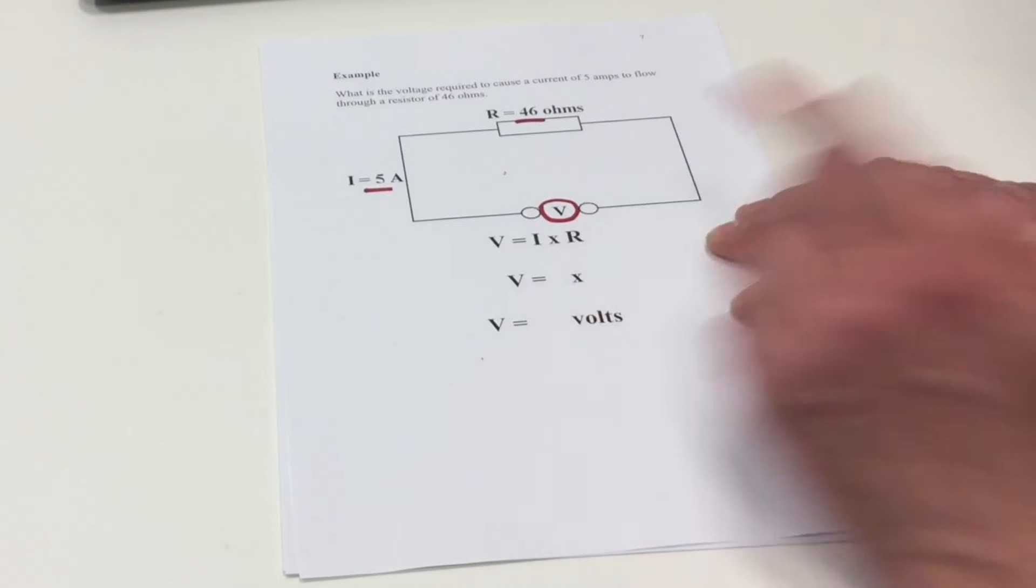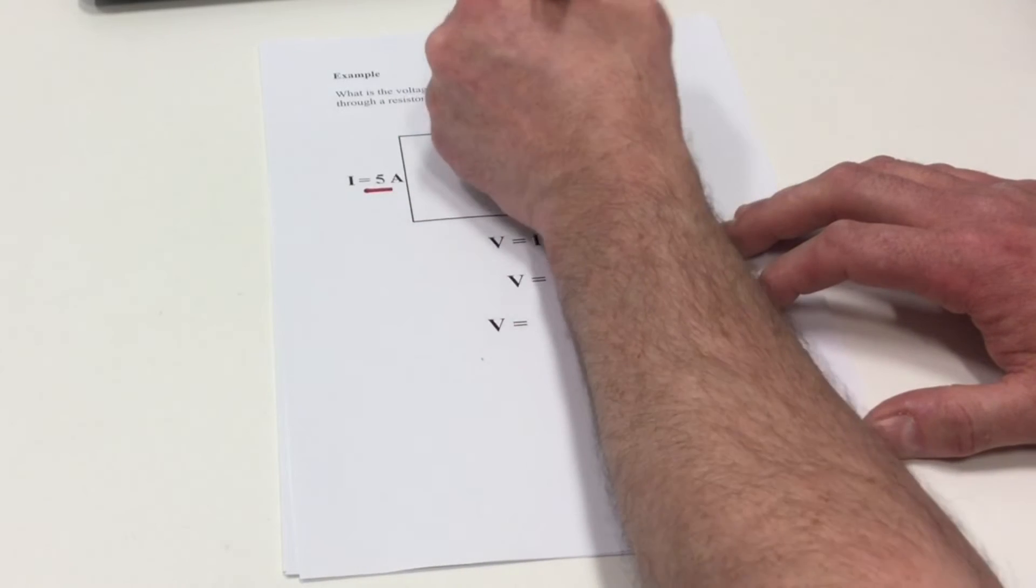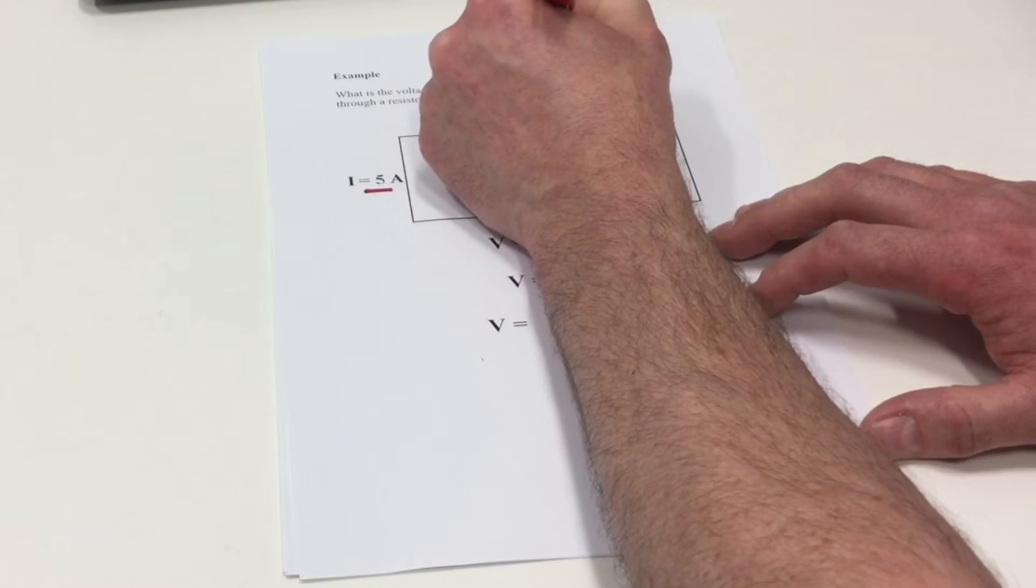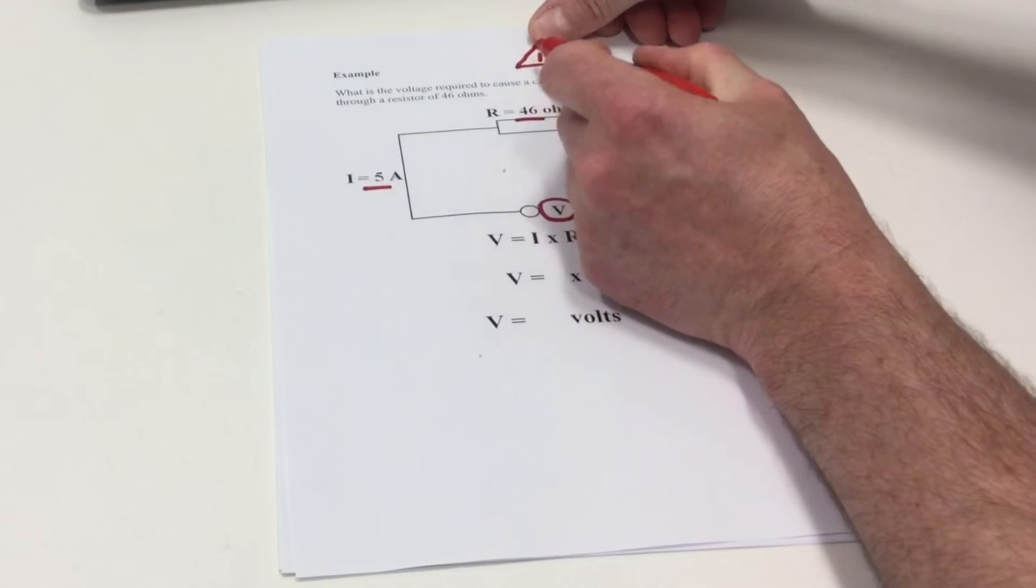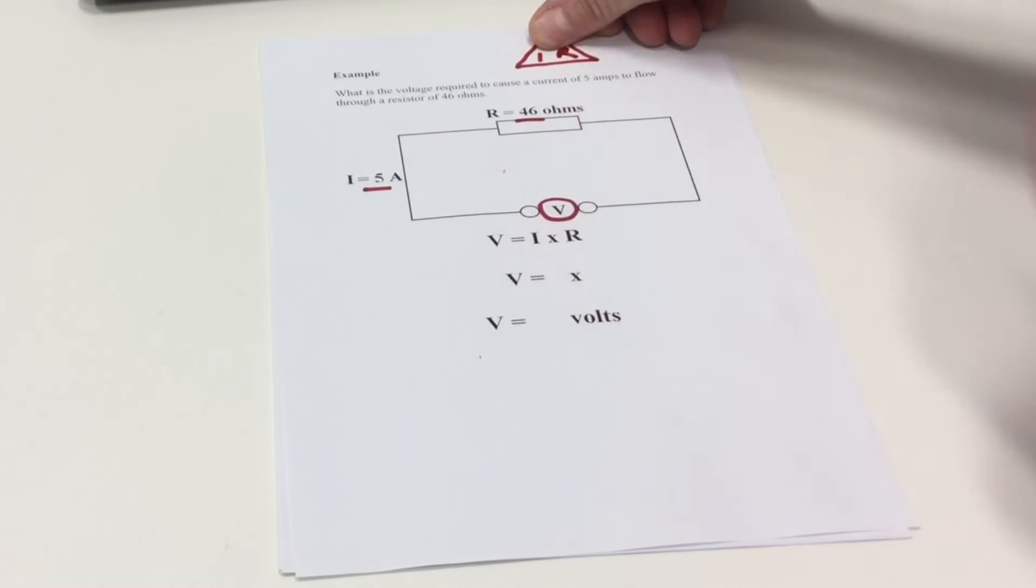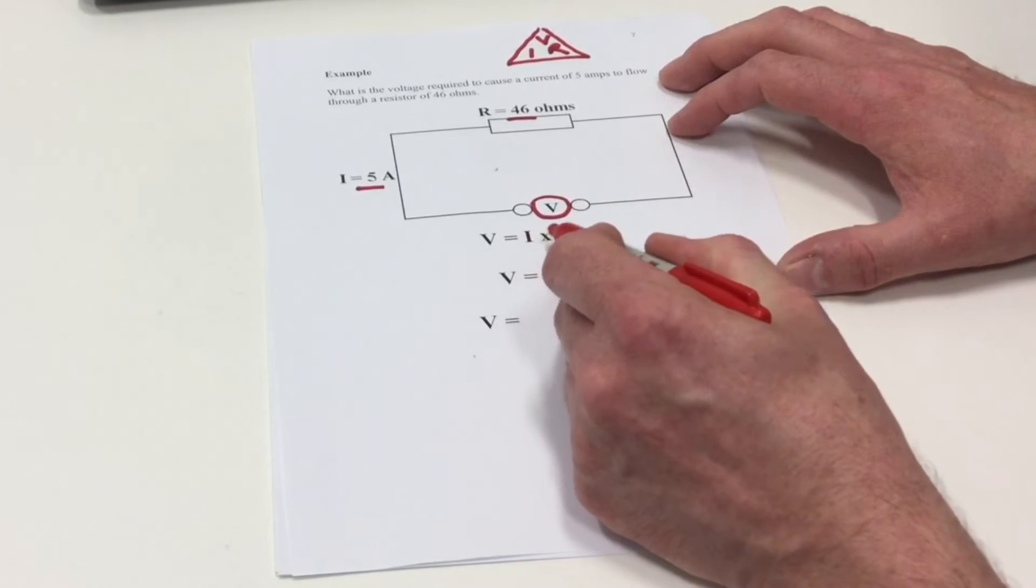So we're trying to find voltage. We could do our triangle again at the top that we looked on our previous slide, V, I and R. So we cover over V and we've got current multiplied by resistance. The formula reads voltage equals current times resistance.